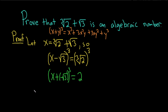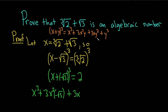Applying the formula: we cube the x to get x cubed, plus 3x squared times y where y is negative root 3, so that's (negative square root of 3). Then plus 3x times y squared — squaring the square root of 3 gives us just 3. Then plus y cubed, which is negative root 3 cubed, and that's equal to 2.